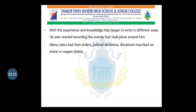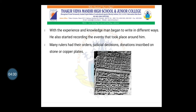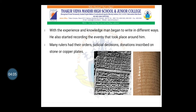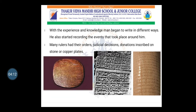With experience and knowledge, man began to write in different ways. He started recording the events that took place around him — whatever was happening in society. At the time of different rulers and kings in India, they started writing their orders, decisions, and donations on rocks or stones. In these two pictures you can see inscriptions on stones and on a pillar. People also used to write on copper plates.